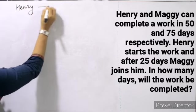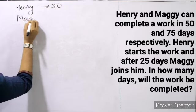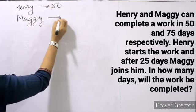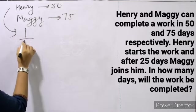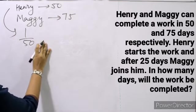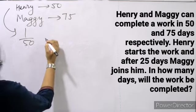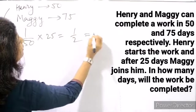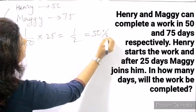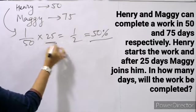Henry and Maggie can complete a work in 50 days and 75 days respectively. Henry can do 1 by 50th of the work in 1 day. Henry has started working, and after 25 days Maggie joins him. In 25 days, Henry does 1 by 2 of the work — that is 50% of the work is finished in 25 days.